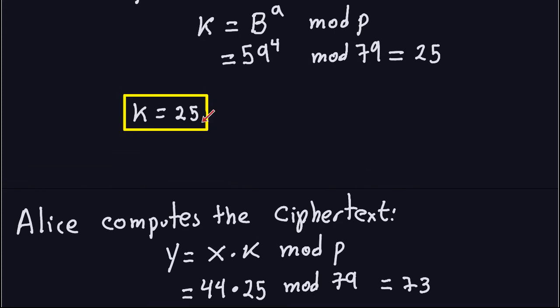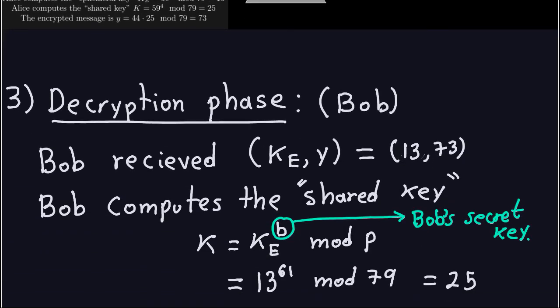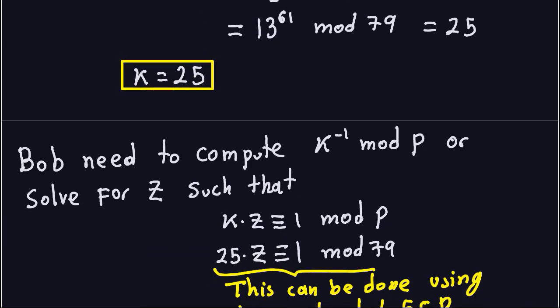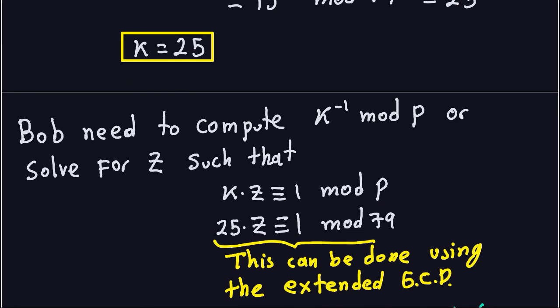If you're doing this by hand, you must get the same K in both cases — the shared key is the same. Now Bob can decrypt the message. He multiplies the ciphertext by the inverse of K modulo P. The inverse of K mod P is a number Z such that K times Z is congruent to 1 modulo P — just like how the inverse of 2 is 1/2 because 2 times 1/2 equals 1, but here multiplication is modulo P.